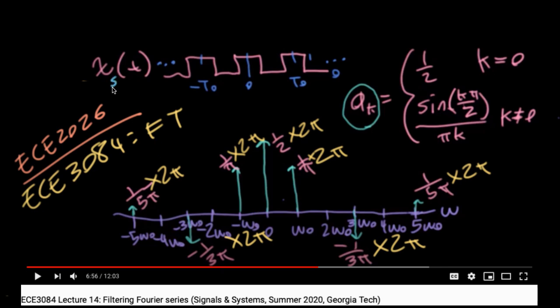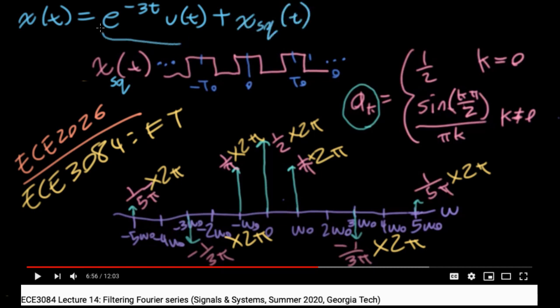So suppose I call this x_sq of t to indicate that it's a square wave, and I wanted to say, what's the Fourier transform of x(t) equal e to the minus 3t u(t) plus x square wave of t? Well, I could do that. I could compute the Fourier transform of this from our Fourier transform tables we've had before, and then I could write in the series. I could write the series sum of the Fourier transform of this with those delta functions, and I just have to remember to multiply all of the Fourier series coefficients by 2 pi, and this puts everything here on an equal footing.